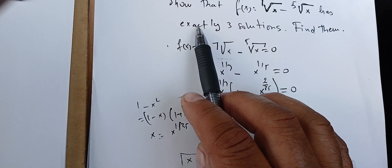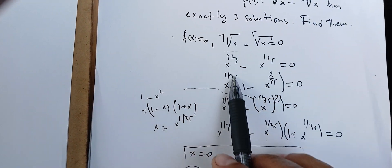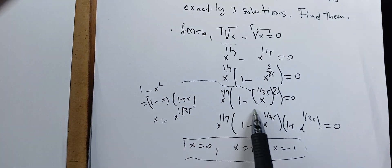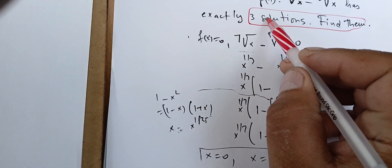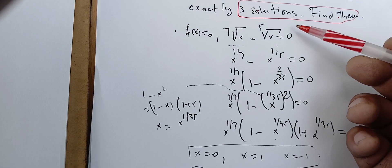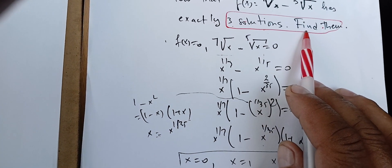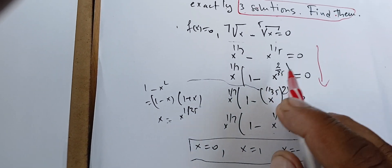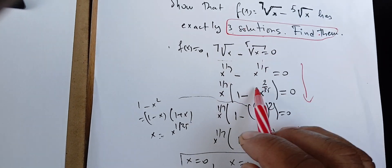We have solved both parts of the question: we've shown there are three solutions and we've found them. We could have done this problem a different way, but factoring is the easiest approach to answer both questions at the same time. Other methods require separately showing existence and finding the solutions, but factoring gives us all three — zero, one, and negative one — at once.